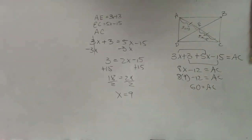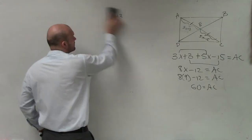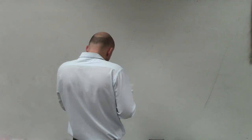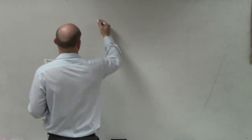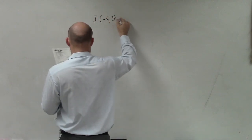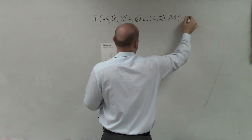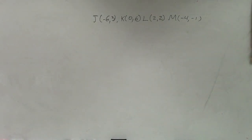I'm going to do number 11 now, and then I will finish up with number 9. So here we have J, negative 6, 3. K, 0, 6. L, 2, 2. And M, negative 4, negative 1. So you guys need to know how to do your homework.